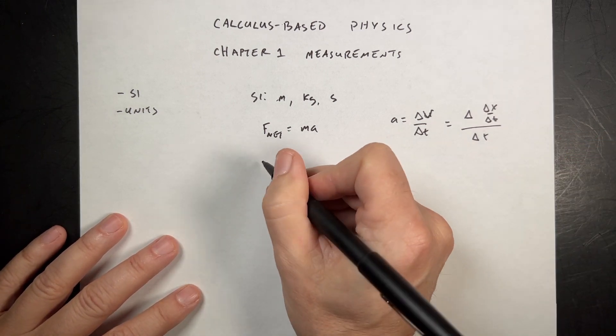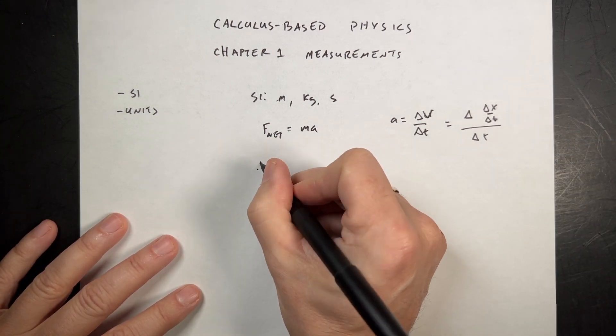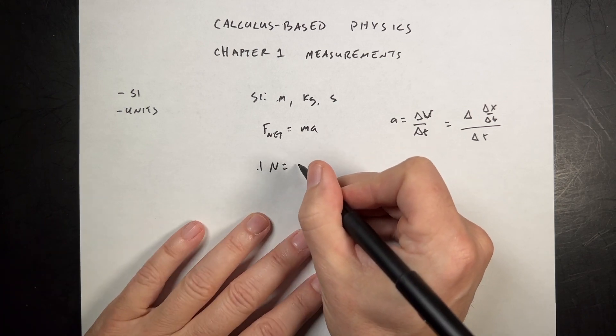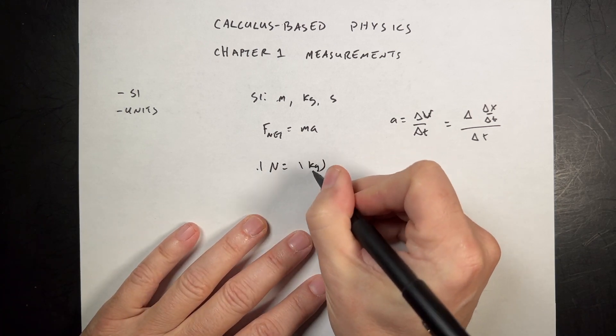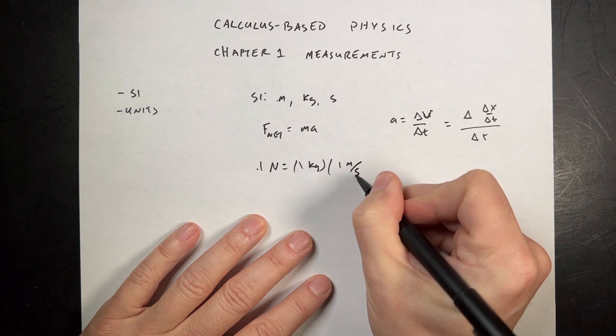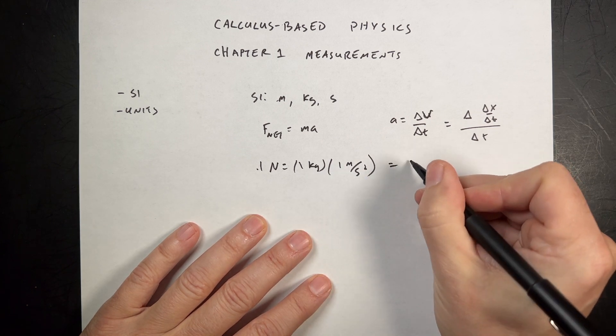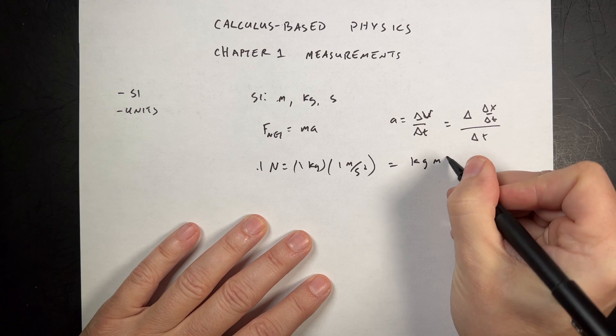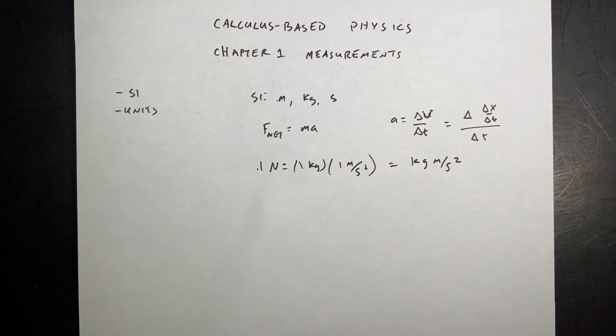Mass is in kilograms, so that means that the force in newtons, one newton, is equal to one kilogram times one meter per second squared, which is a kilogram meter per second squared.